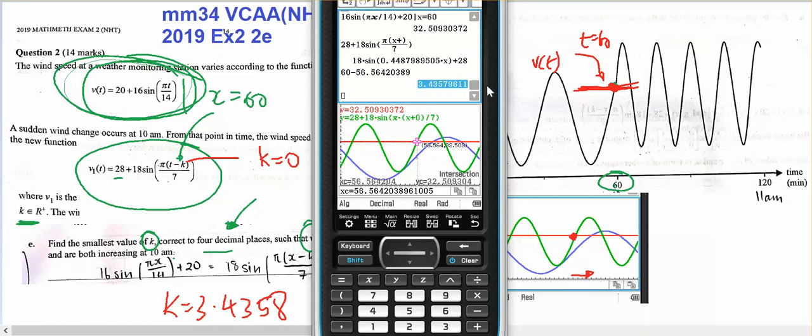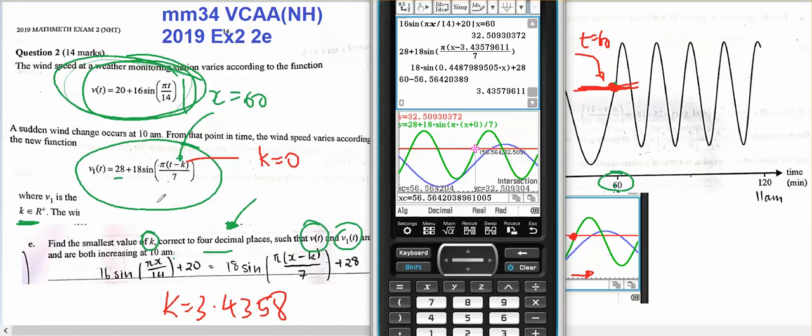Taking that and putting that there, and then taking this, sorry it's going to be minus that because in the rule it said minus k. And I'm now going to take all of this and drag and drop, and I want it to go through this intersection point here at 60.